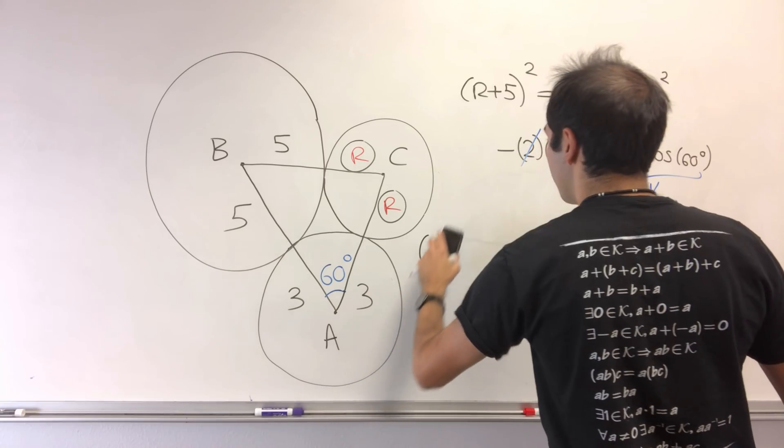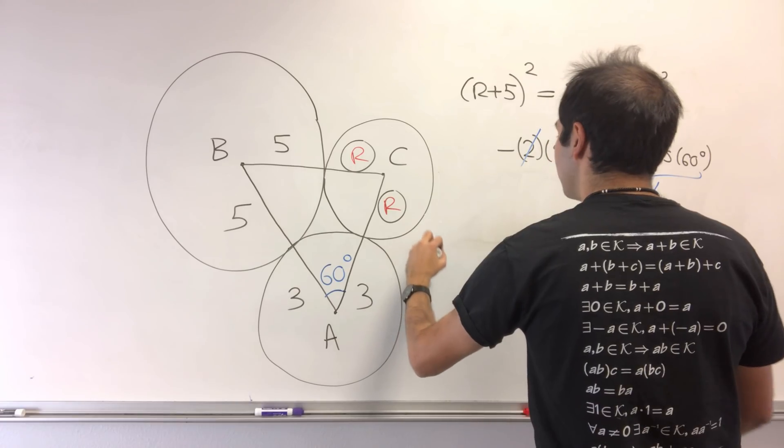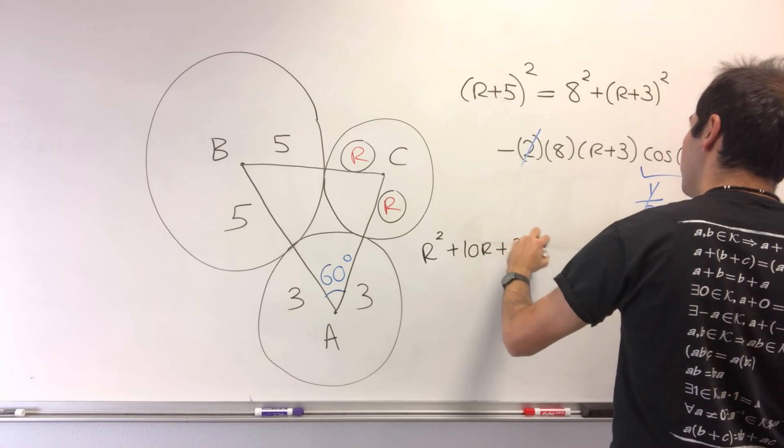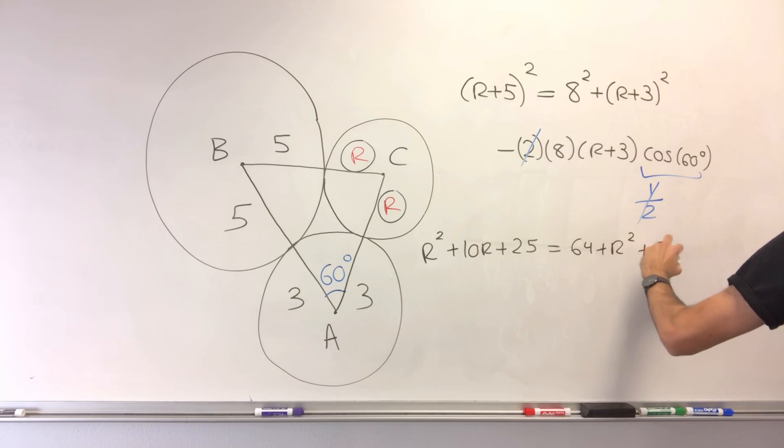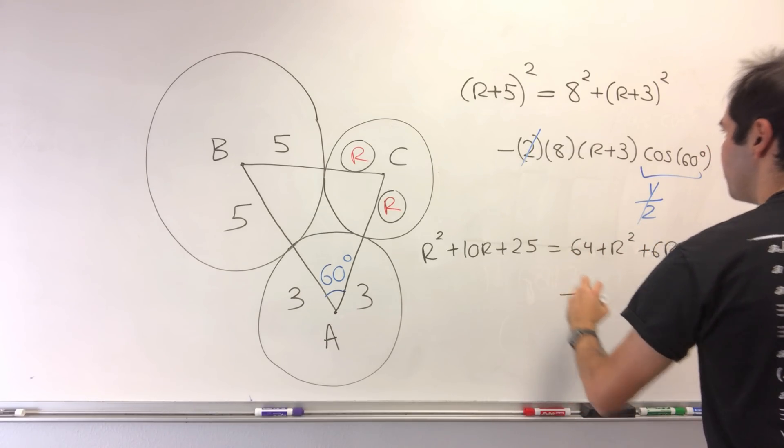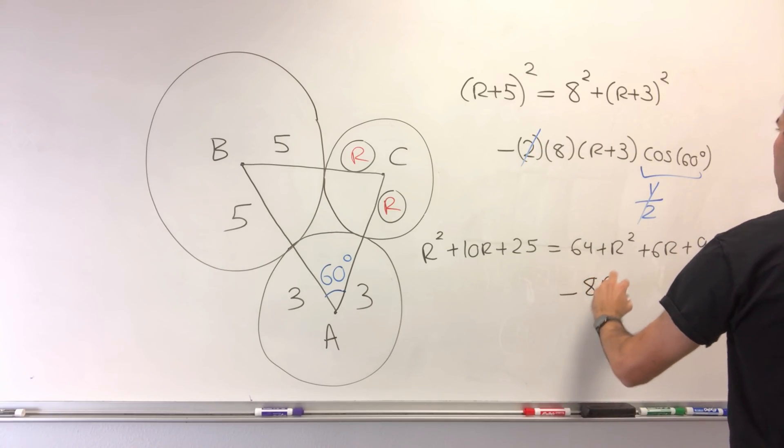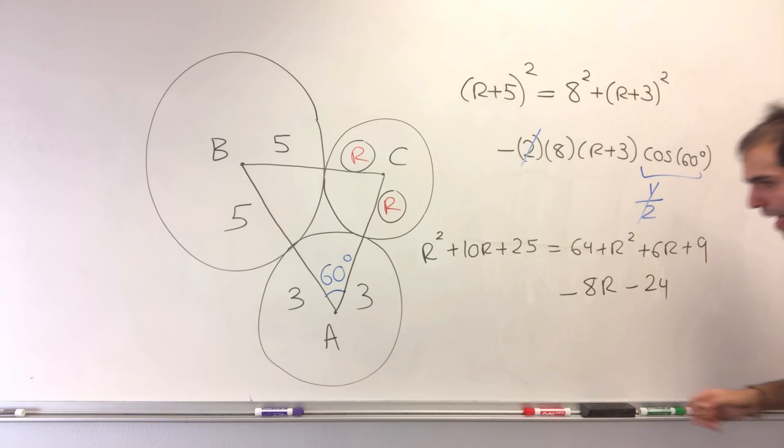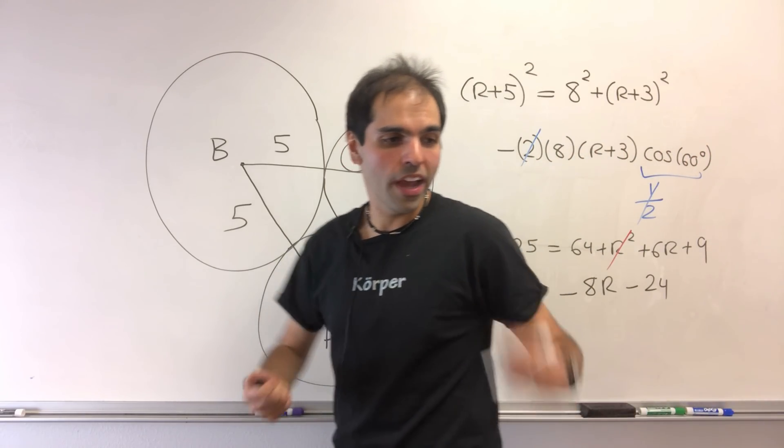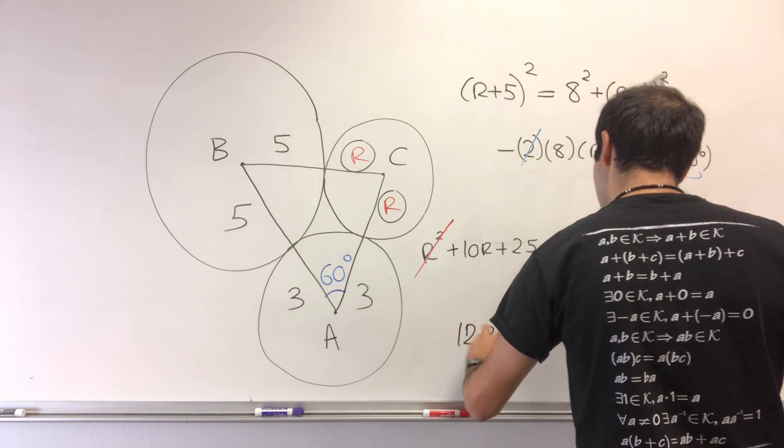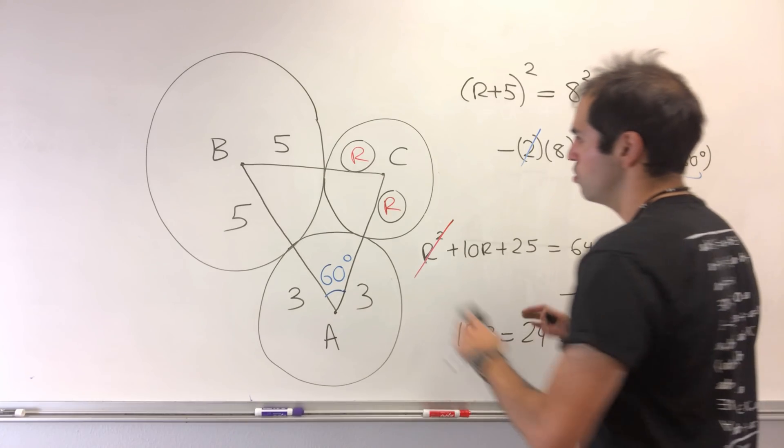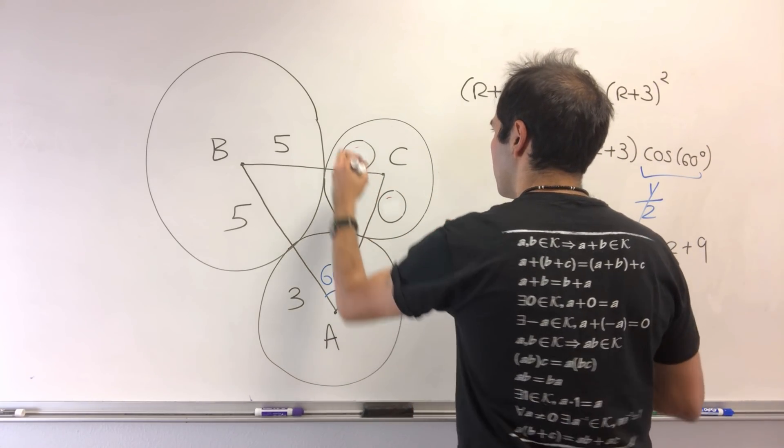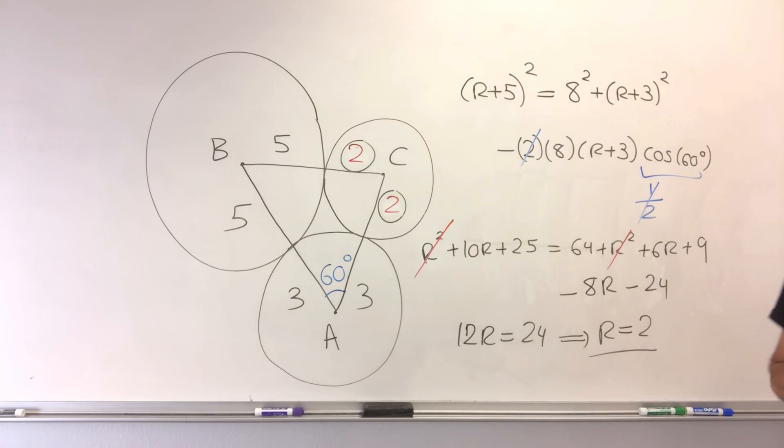So we get (r+5)², which expands as r² + 10r + 25, equals 64 + r² + 6r + 9 - 8r - 24. The r² terms cancel out, and in the end we have 12r = 24, which tells us that this radius is 2. So the solution is r = 2, and then you're essentially done. But not so fast.